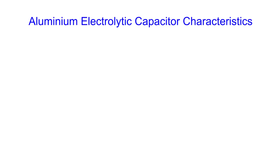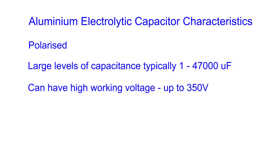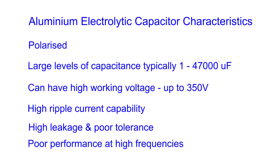Let's summarise the main characteristics of the electrolytic capacitor. First, it's polarised, having positive and negative terminals, and it must be connected the right way round, otherwise damage may result. Aluminium electrolytics normally have large values of capacitance, anywhere from about a microfarad right up to values of — I think the largest I've seen is around 47,000 microfarads. They typically have working voltage values up to around 50 volts, but some for use in high voltage supplies may be as high as 350 volts. They have a high ripple current capability, which makes them ideal for use in power supplies, but on the downside they have a relatively high level of leakage and a poor value of tolerance or accuracy, often plus 50% and minus 20%, which rules them out of precision applications. They're not normally used for frequencies much above 100 kHz, and use with radio frequencies is definitely out.